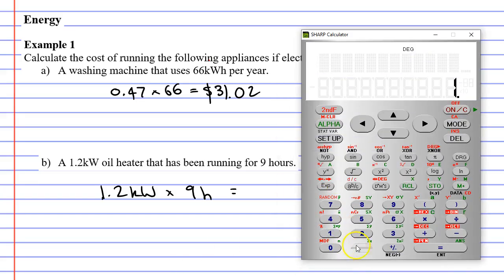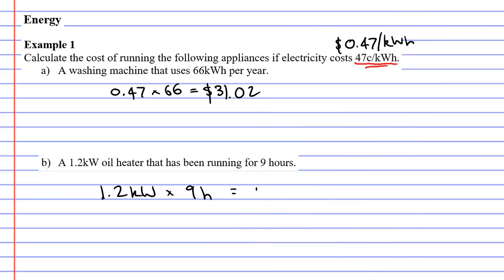Bringing up our calculator, 1.2 times 9 equals 10.8. So it has used 10.8 kilowatt hours of electricity. Now all we need to do is take the 10.8 and multiply it by the amount we pay per kilowatt hour, or by 0.47.